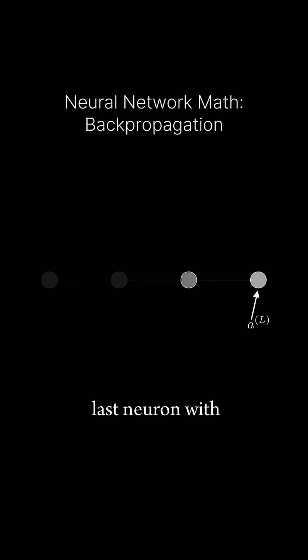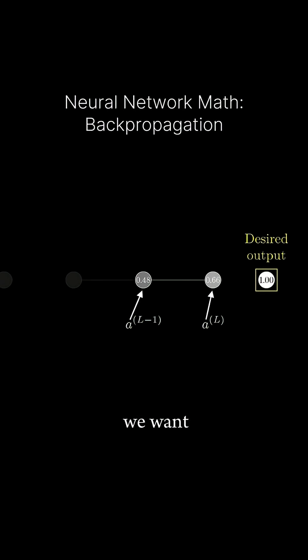Let's label the activation of that last neuron with a superscript L, indicating which layer it's in. So the activation of the previous neuron is a L-1. Now let's say that the value we want this last activation to be, for a given training example, is Y.